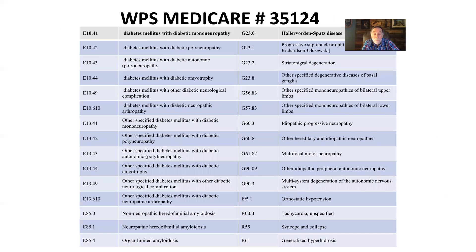Interestingly, WPS Medicare updated theirs about the same time and they have the same diagnosis codes. You'll notice codes on there like tachycardia or orthostatic hypotension. Orthostatic hypotension is probably present in 50% of the population over 50 years old, and doctors aren't even diagnosing it because they're not asking the right questions. This is a covered diagnosis.